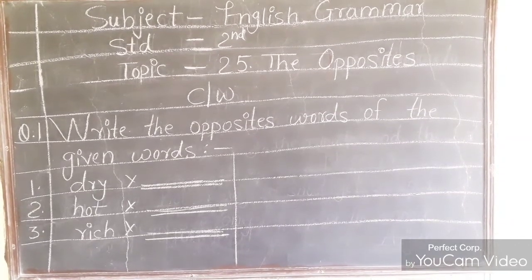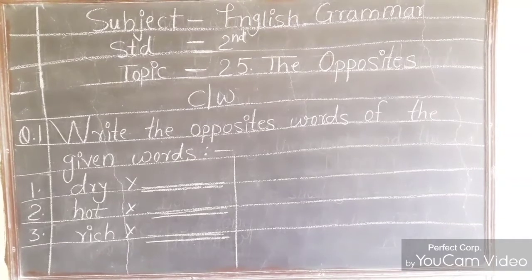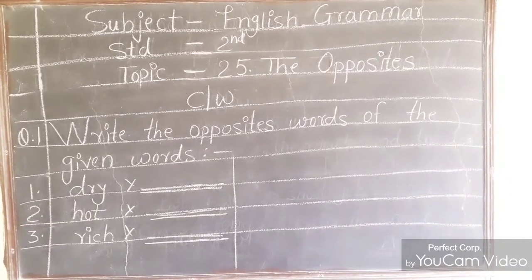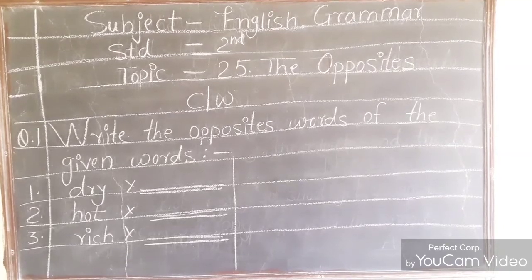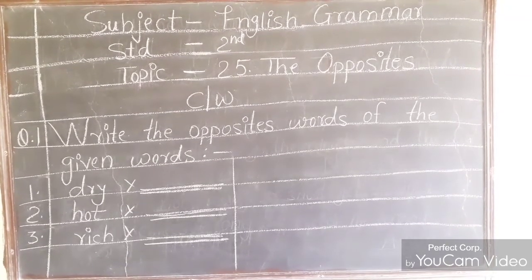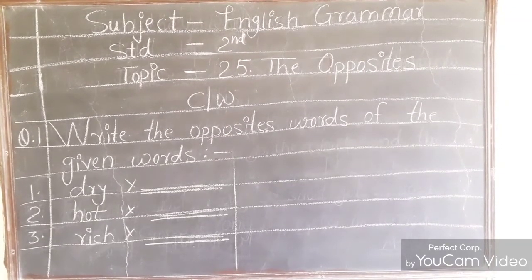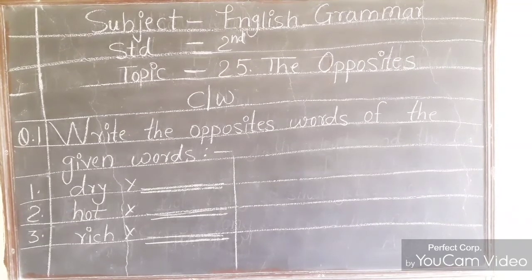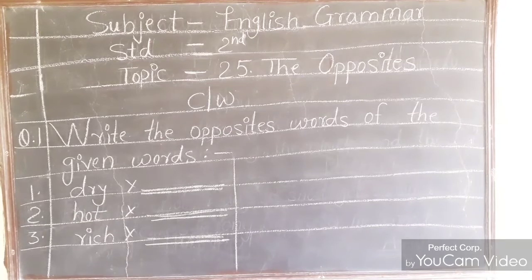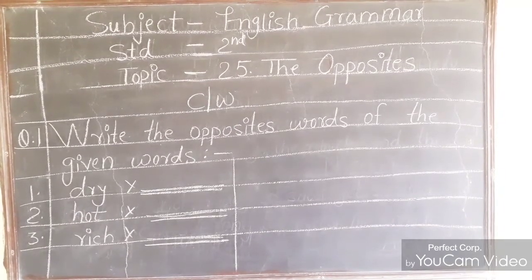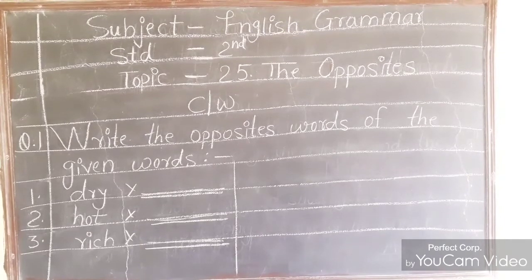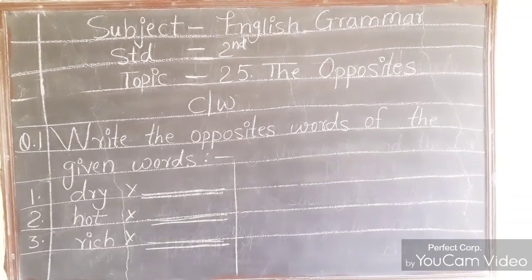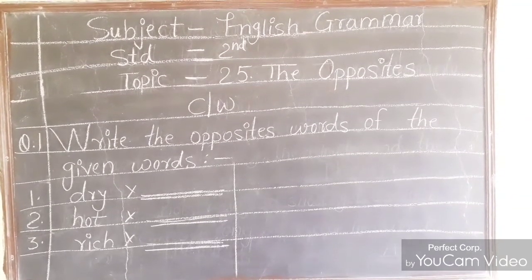Look at number one. Dry — dry means sukha (dry). So, opposite of dry will be wet. Next, hot — hot means garam. Garam ka ulta kya hoga? Thanda. So, opposite of hot will be cold. Rich — rich means ameer. Opposite of rich will be poor.